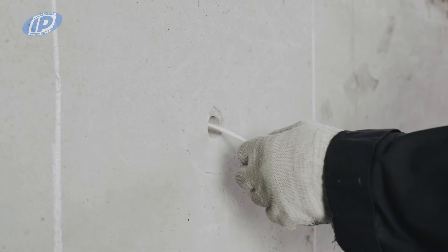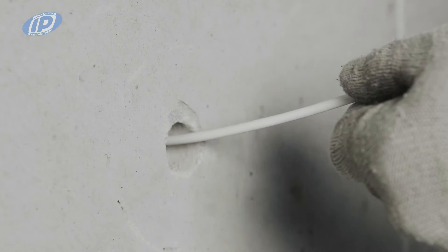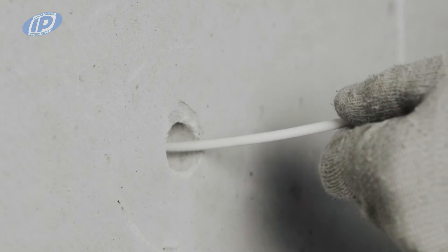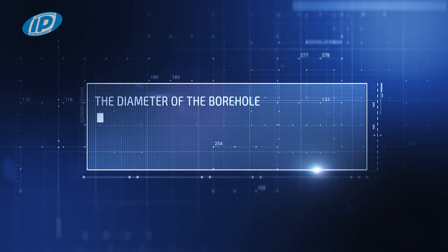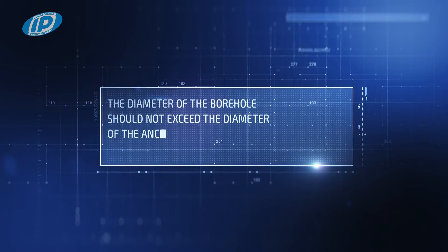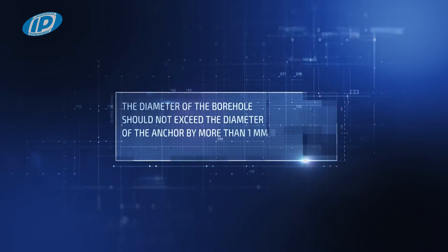Having bored the hole, clean it of dust and crushed concrete by, for example, flushing the borehole with compressed air. Then, if necessary, calibrate the diameter with a jumper. The diameter of the borehole should not exceed the diameter of the anchor by more than one millimeter.